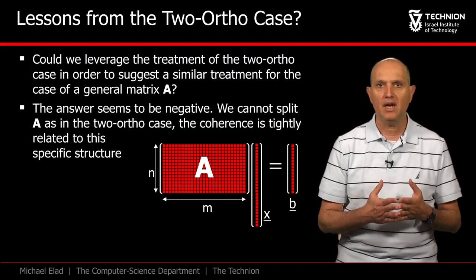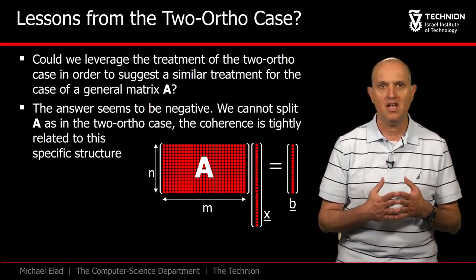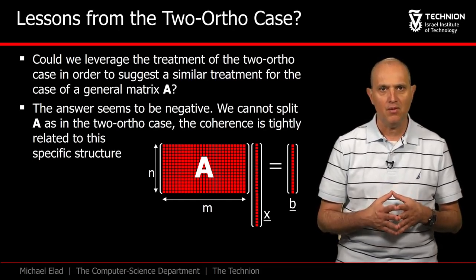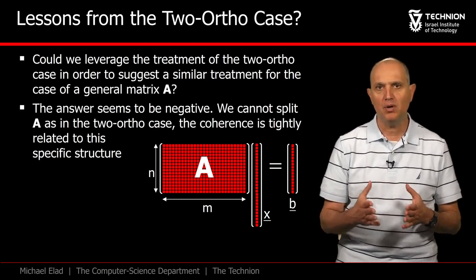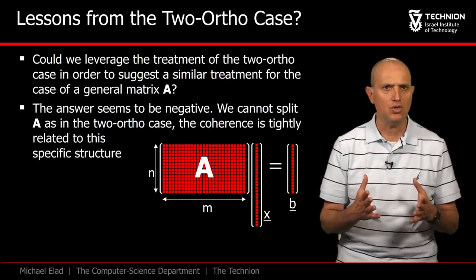Recall the main idea we relied upon. We divided the matrix A into two parts, and this enabled us to get the uniqueness claim. In this path, the mutual coherence was defined by the interaction between the two parts of A. Such a split of A does not seem to be relevant anymore, so what shall we do?